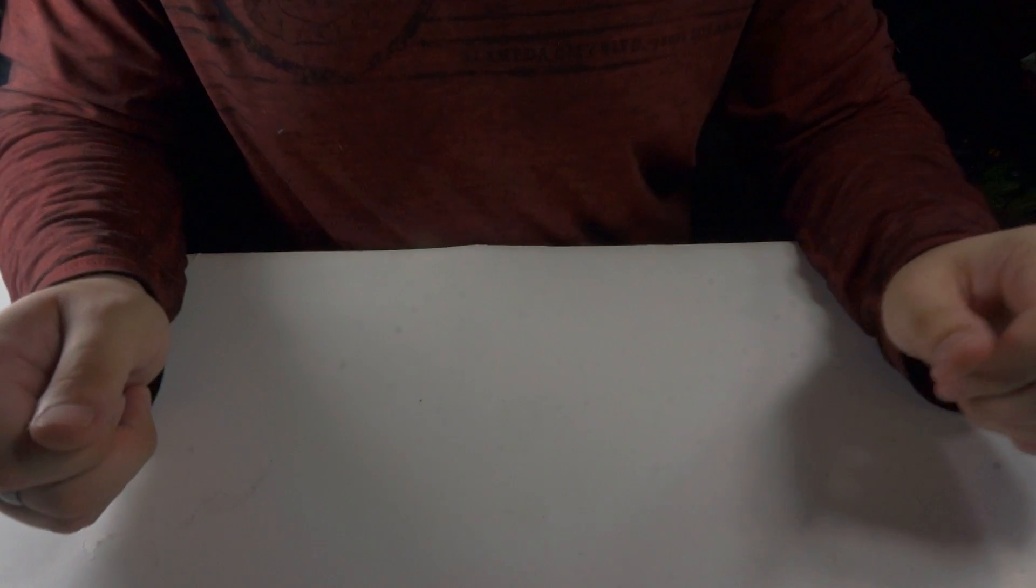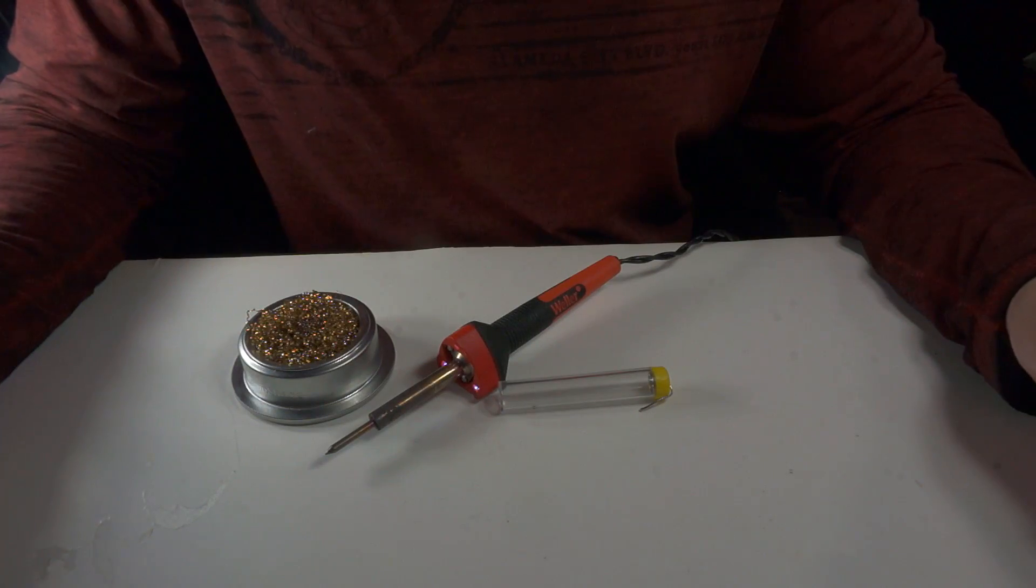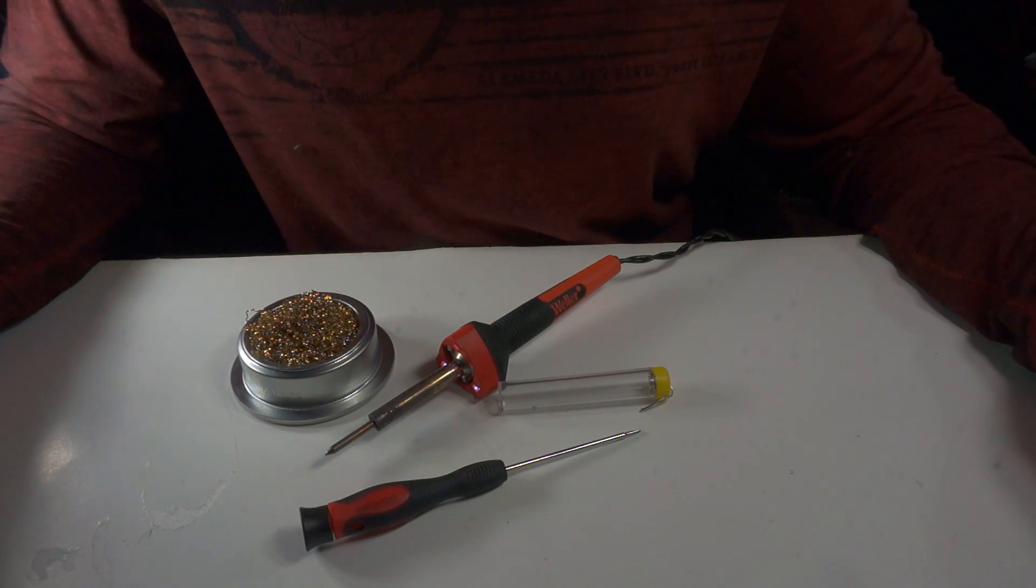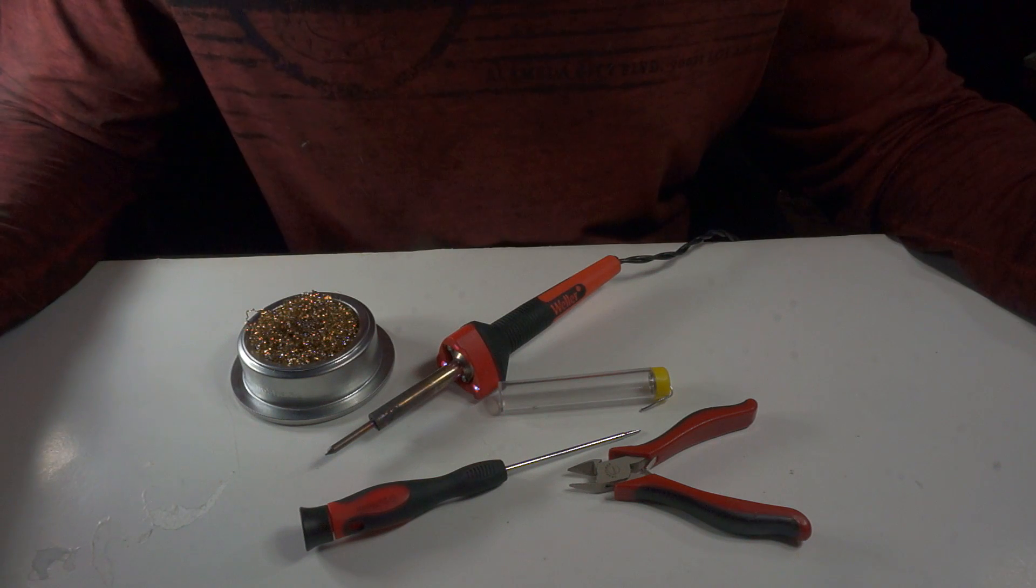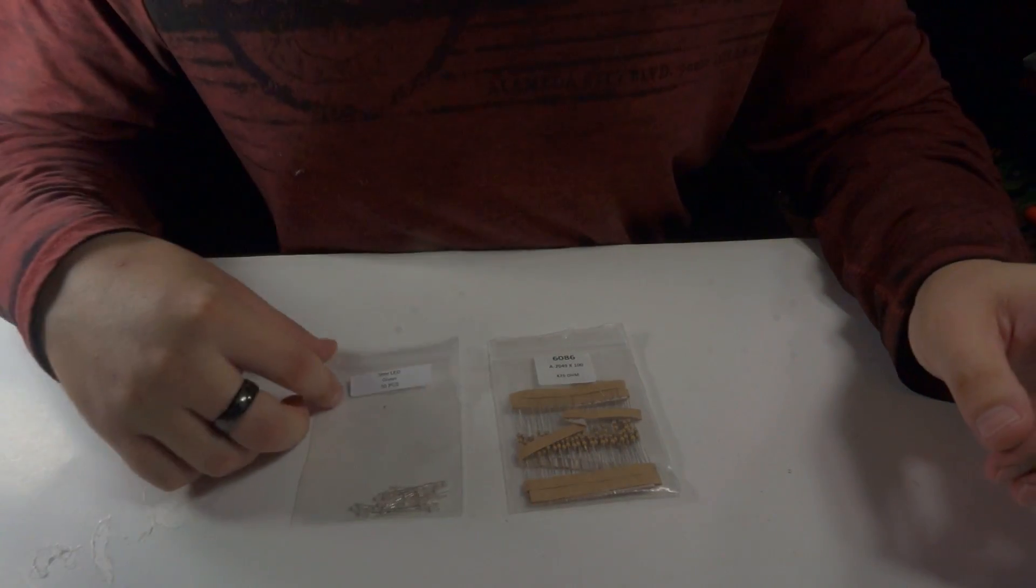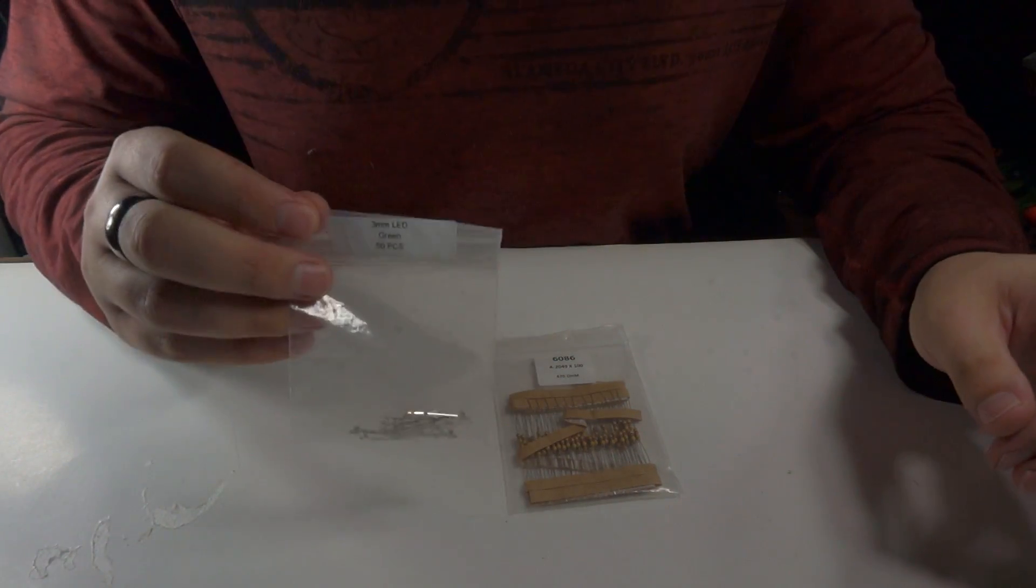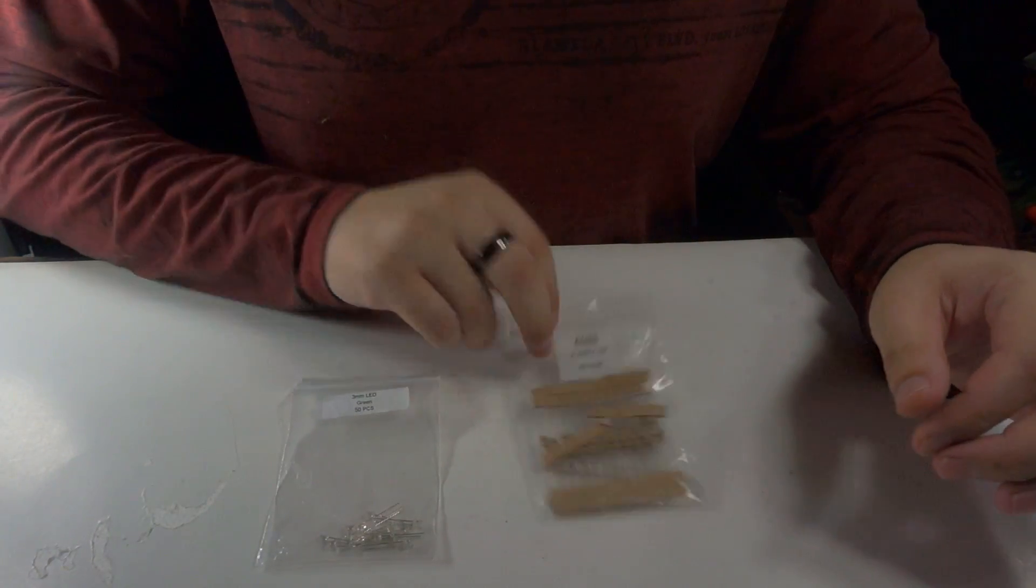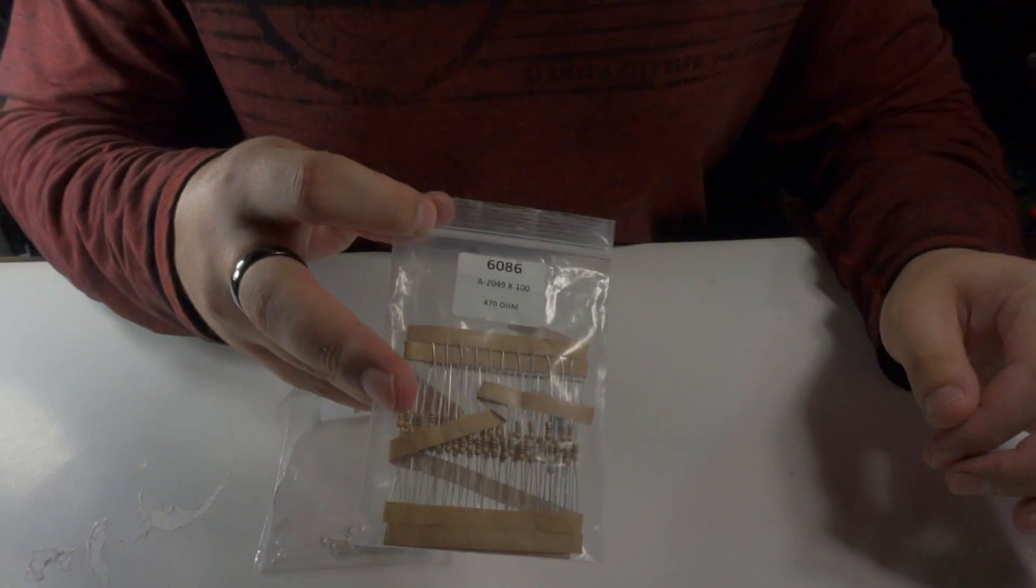The tools you're going to need for this mod are your soldering iron supplies, a small flathead screwdriver, and a pair of wire snippers. And as for the supplies, you're going to need some LEDs. I'm using 3 millimeter green and some resistors. I'm using the 470 ohm.